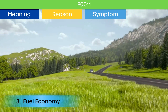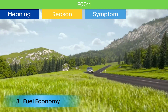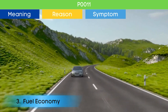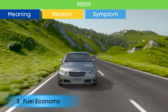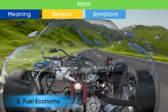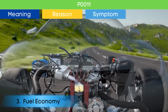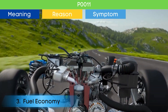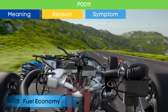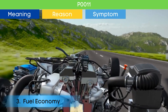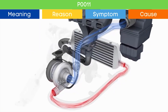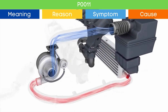Symptom number three: Decreased fuel efficiency. Wrong valve opening and closing due to P0011 lead to incomplete combustion of fuel, which leads to poor fuel economy. Now that we understand the symptoms of P0011, let's delve into the causes of P0011.